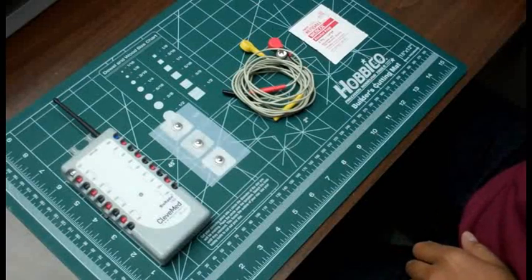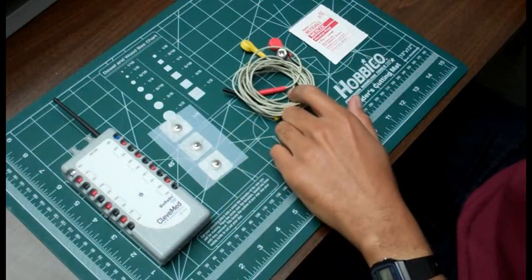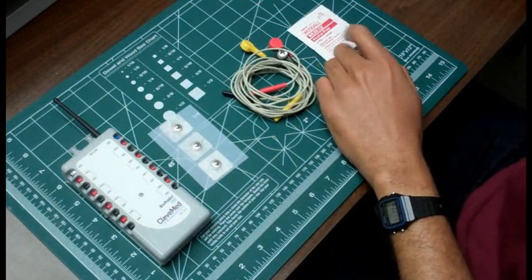This is a quick tutorial for recording ECG with the BioRadio. You'll need the BioRadio, 3 electrodes, 3 electrode cables, and an alcohol wipe.